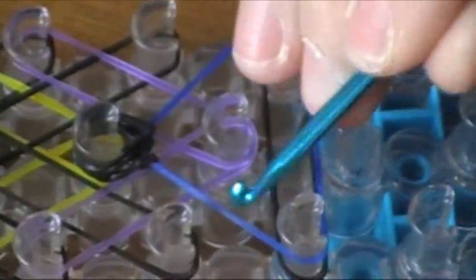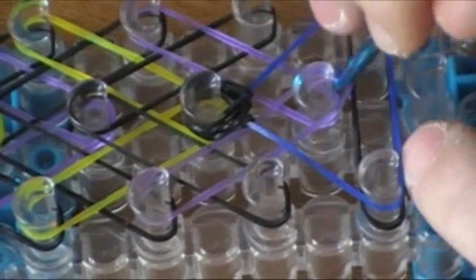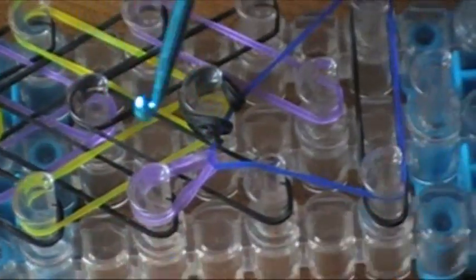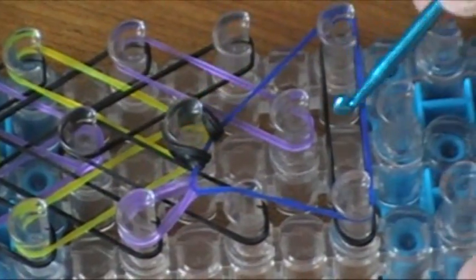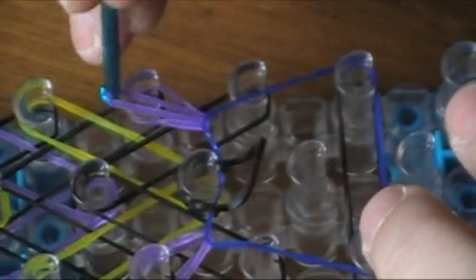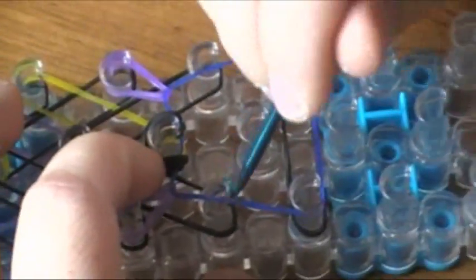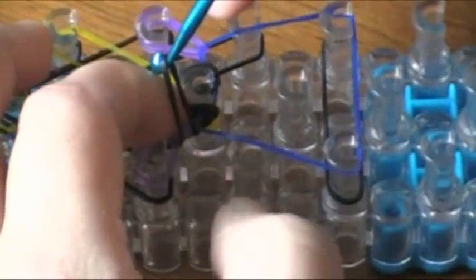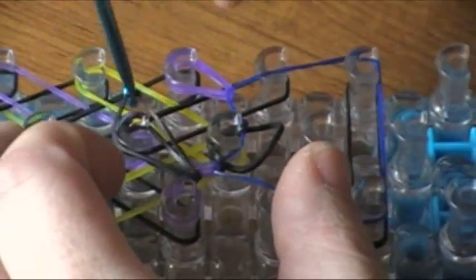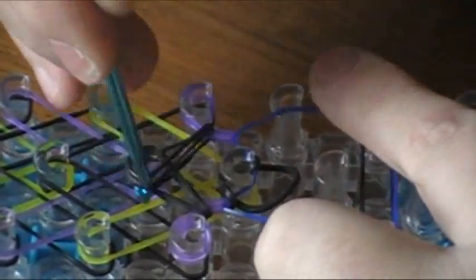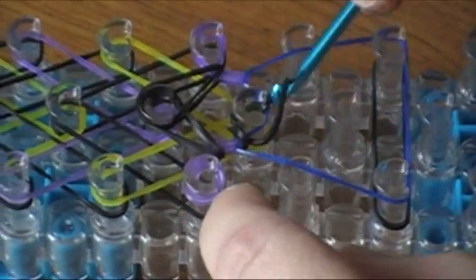Now we're going to grab the top purple band and go over to the left where it originated from, again making that teardrop shape. We're going to have to hold these down until we get to the yellow bands. We're going to come on the left and grab that black band and do the same thing on the right.